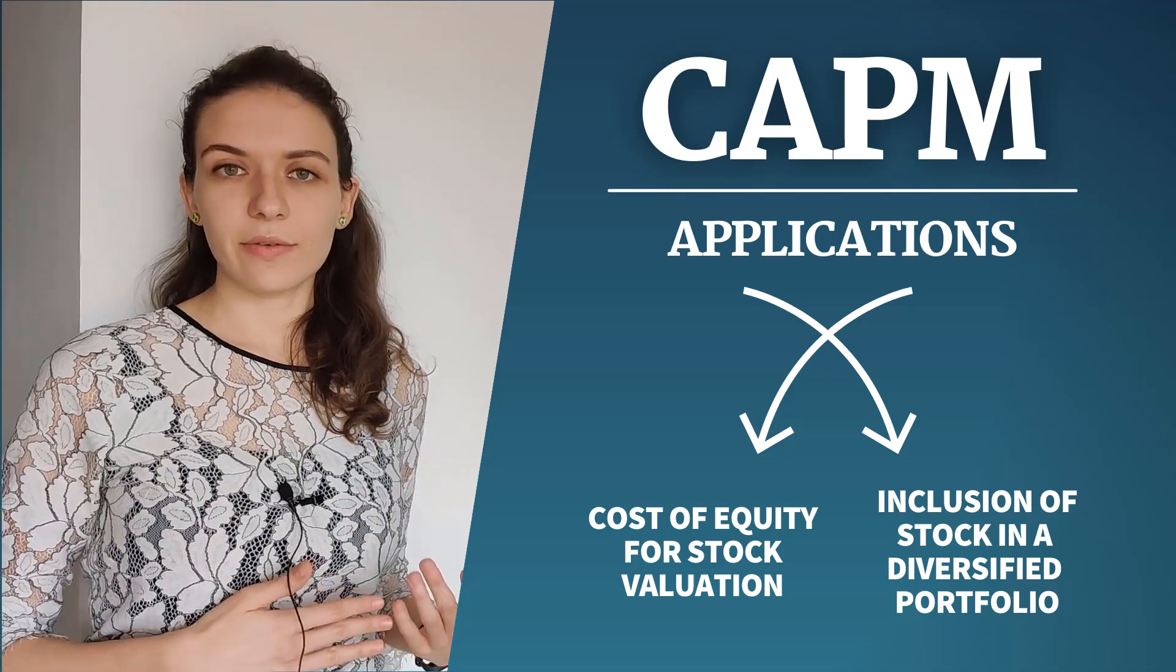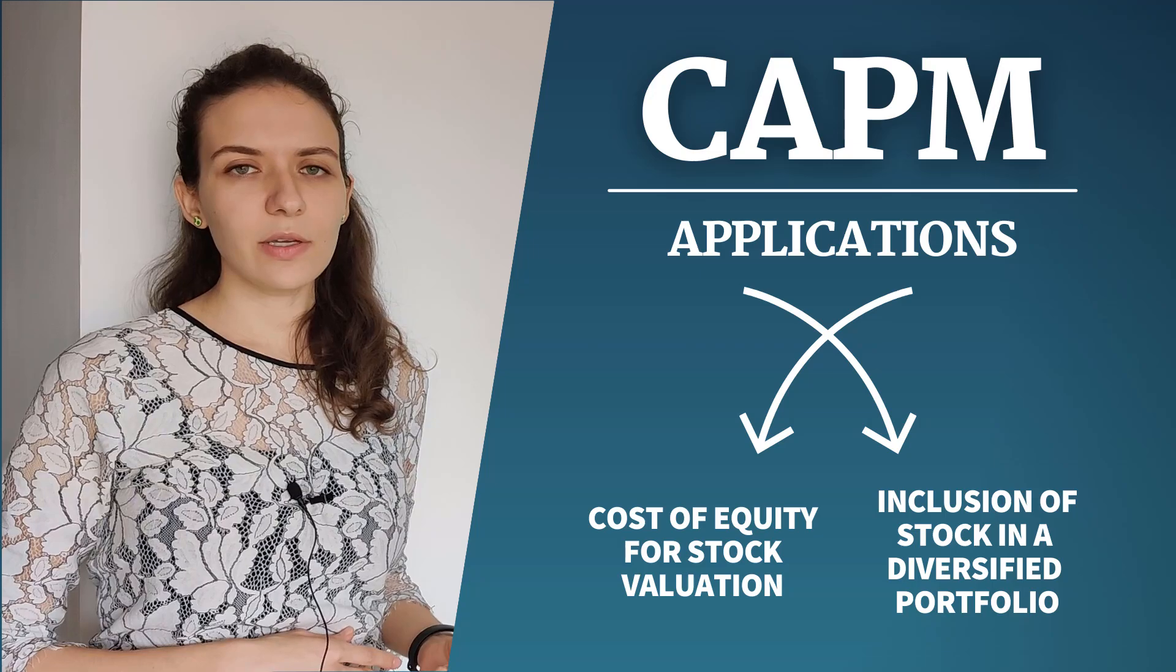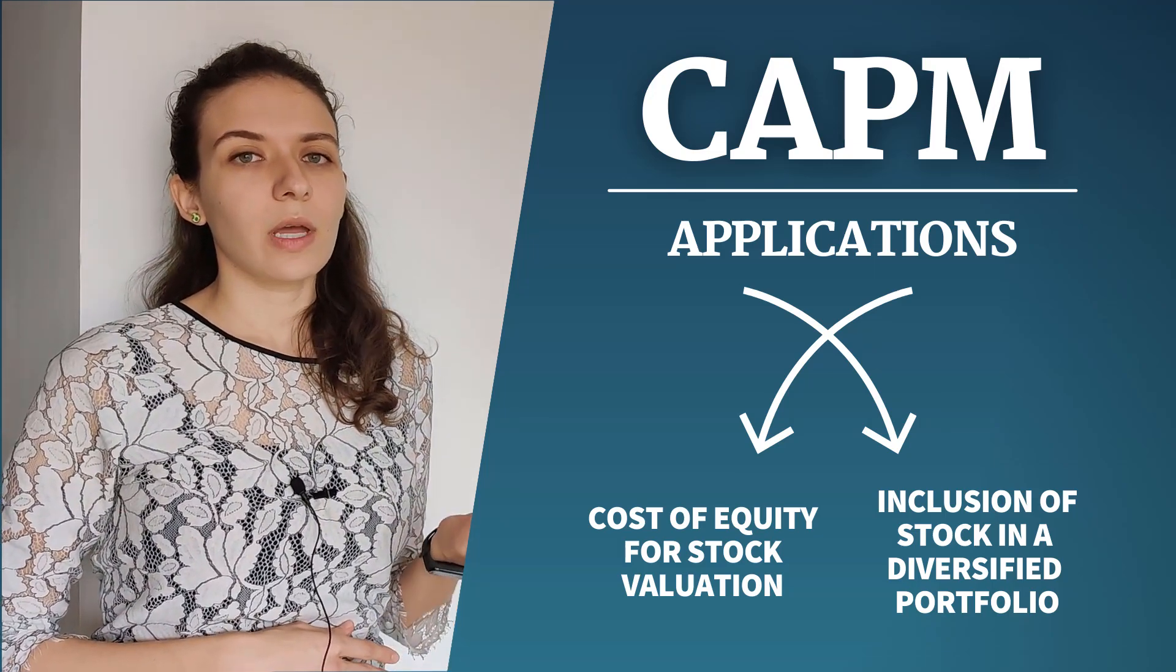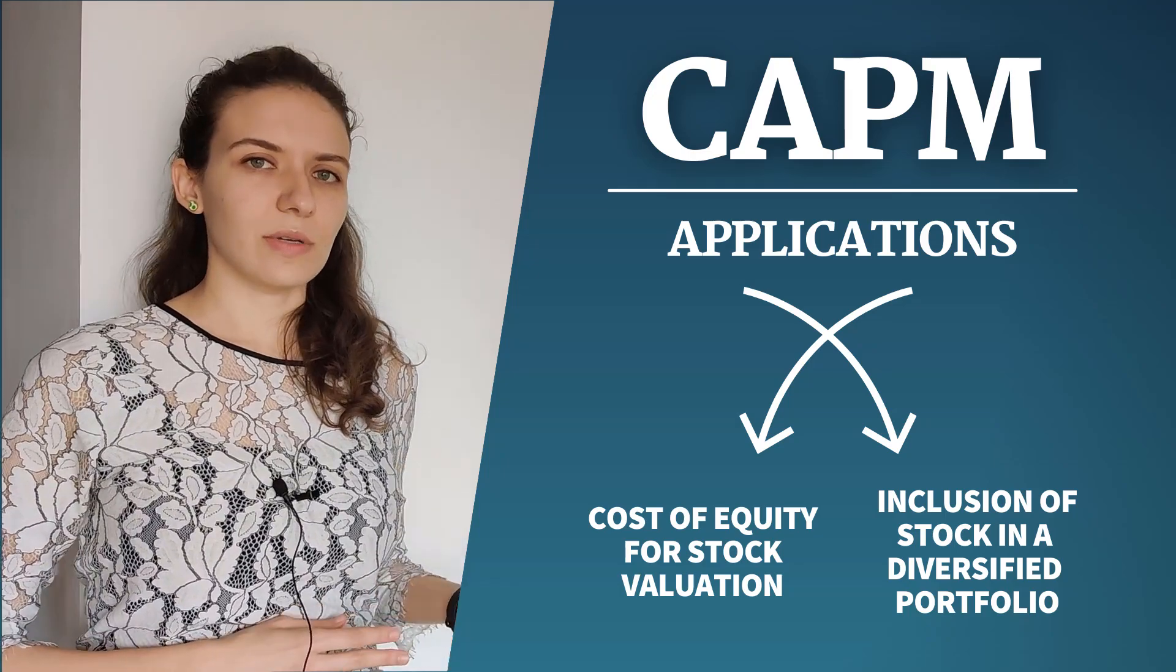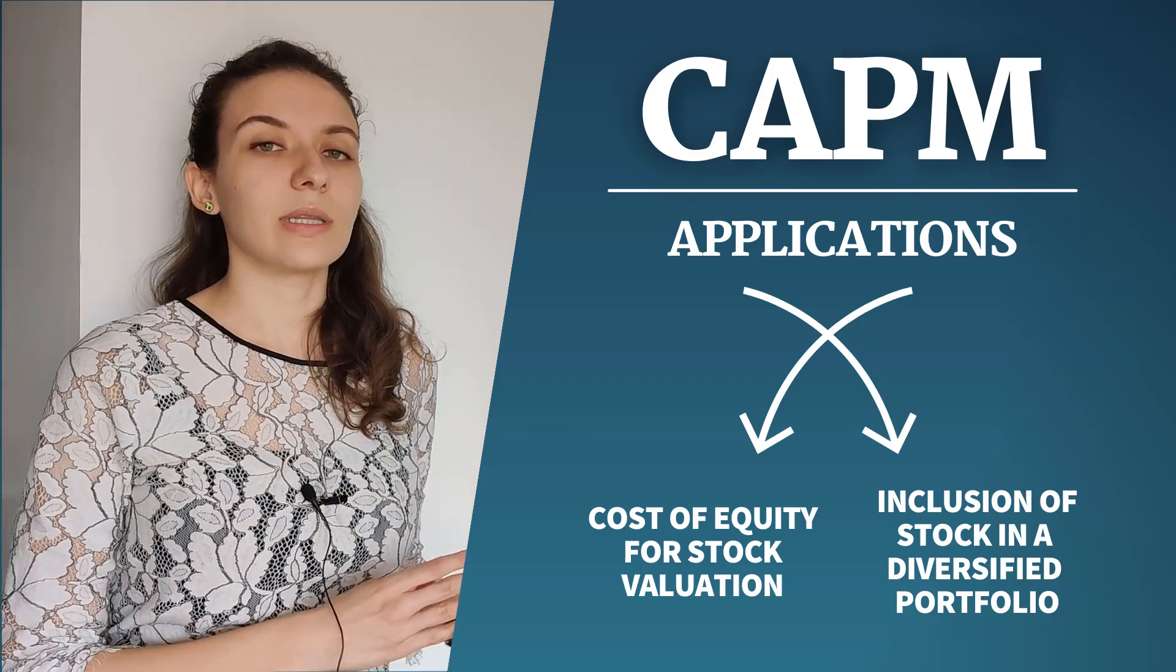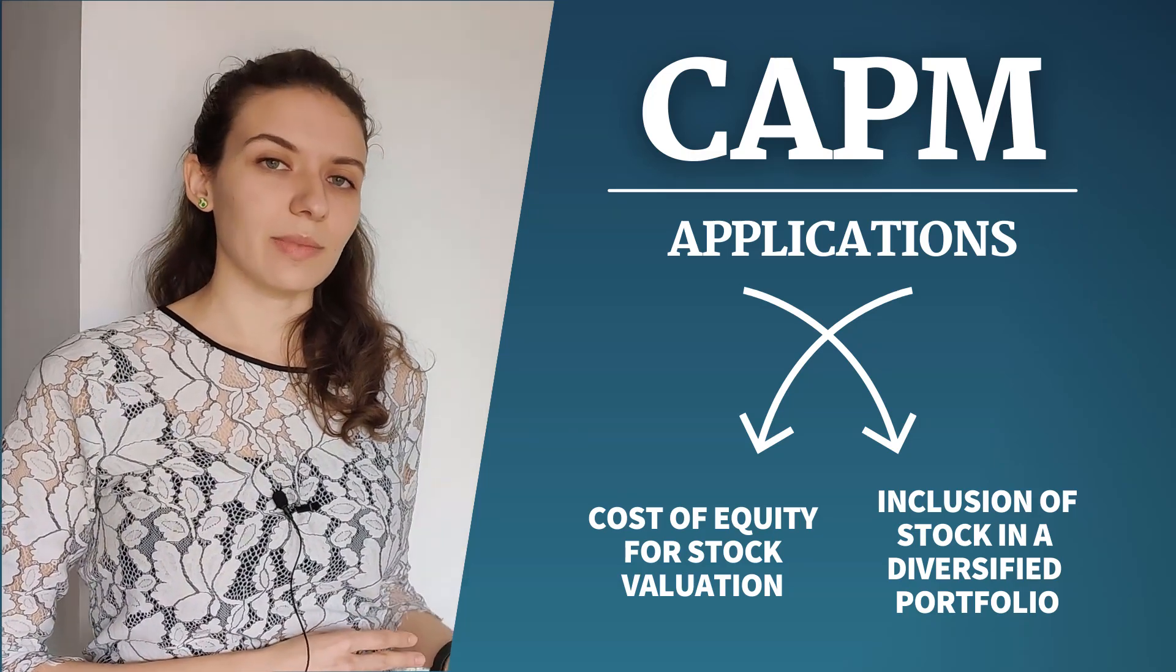If you already have a diversified portfolio of 30 to 40 stocks then the specific risk related to each company is already pretty small because you have small positions and you are diversified. So in that case the only risk that matters is the risk associated with the wider economy, with the wider market index and that will be measured by beta.